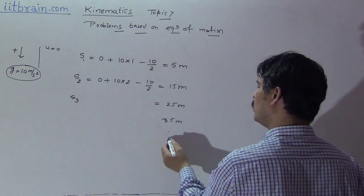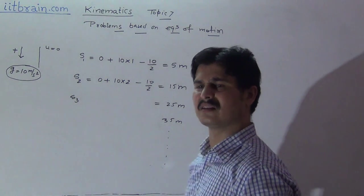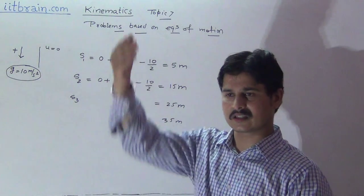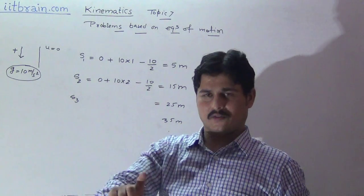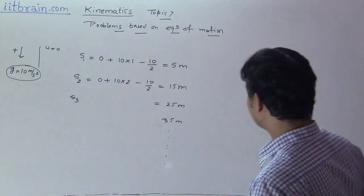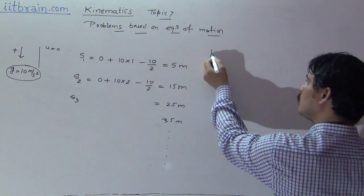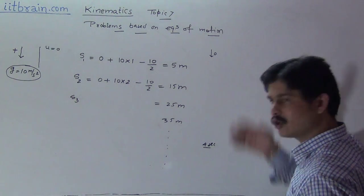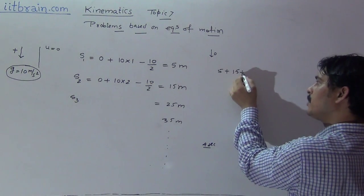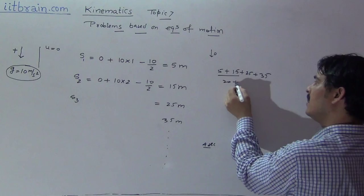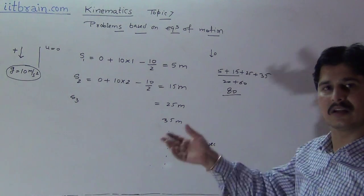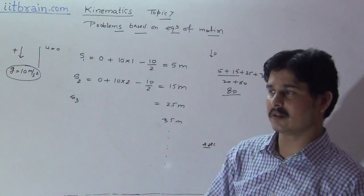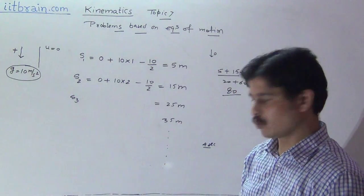For quick calculation, remember that a freely falling particle covers 5, 15, 25, 35 meters in successive seconds. So if a stone is dropped from a tower and takes 4 seconds to reach the ground, the height of the tower is 5 plus 15 plus 25 plus 35 equals 80 meters. This is a useful shortcut for quick calculations.